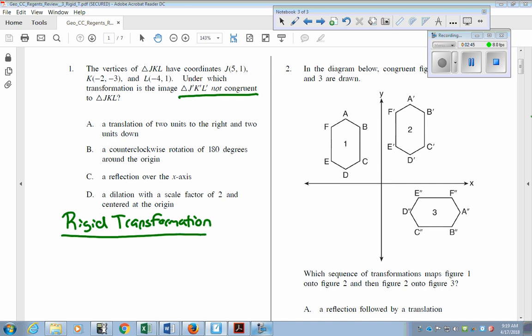So the rigid transformations are translation, reflection, and rotation. So the only one of the four that isn't a rigid transformation is dilation. We're looking for that one. That's going to be the one that's not congruent, and the one that says dilation is going to be D.